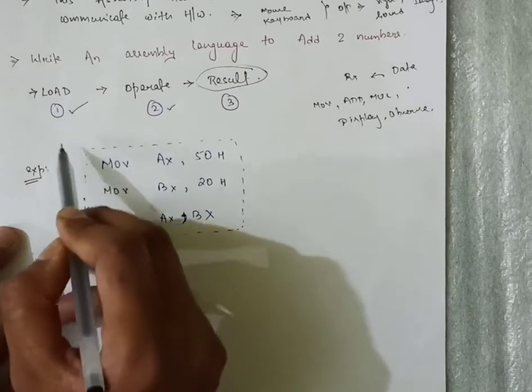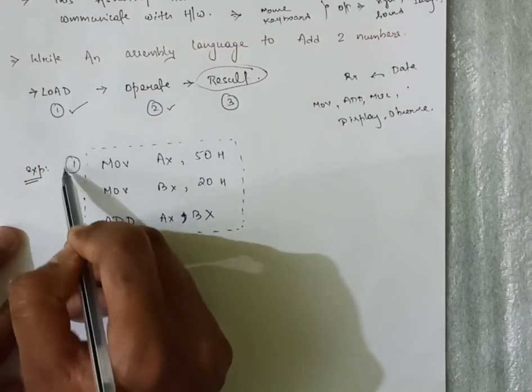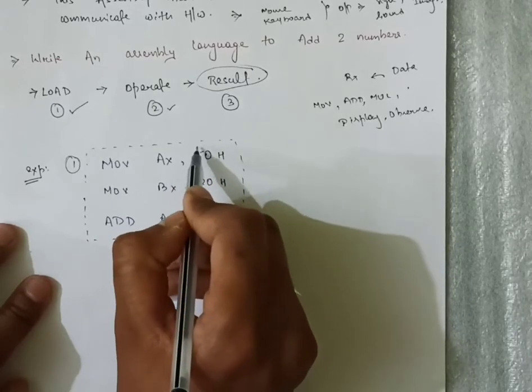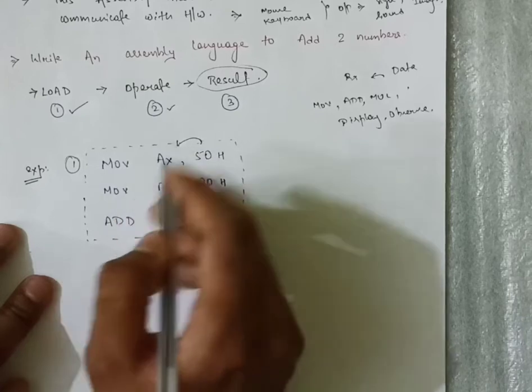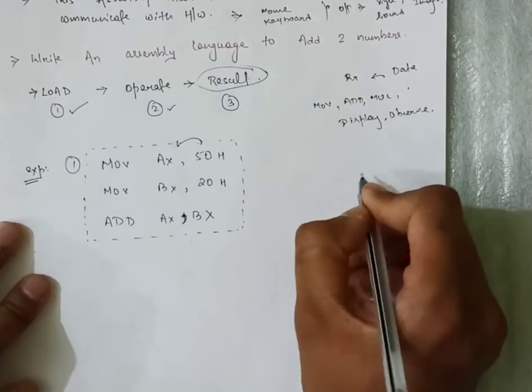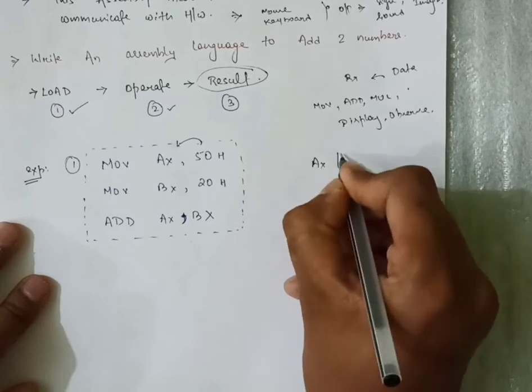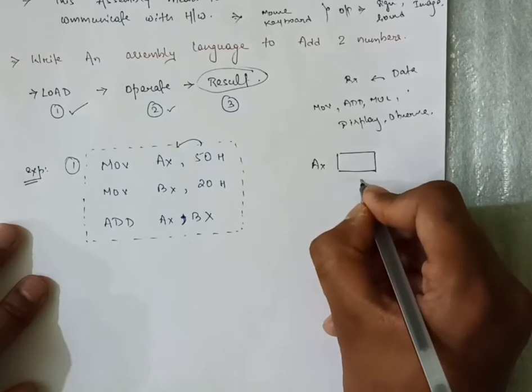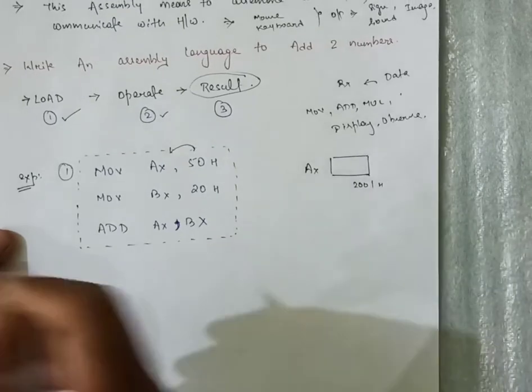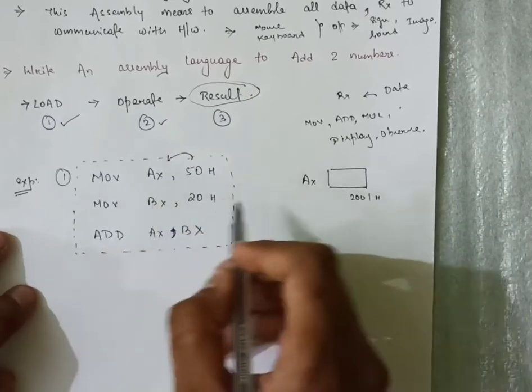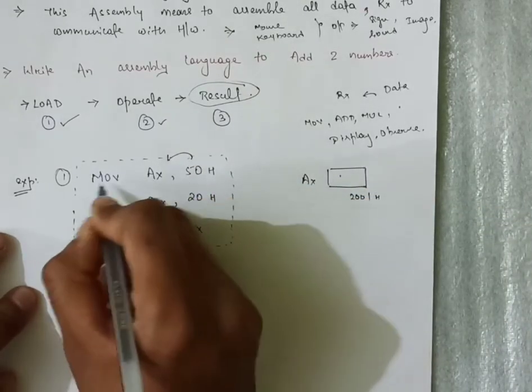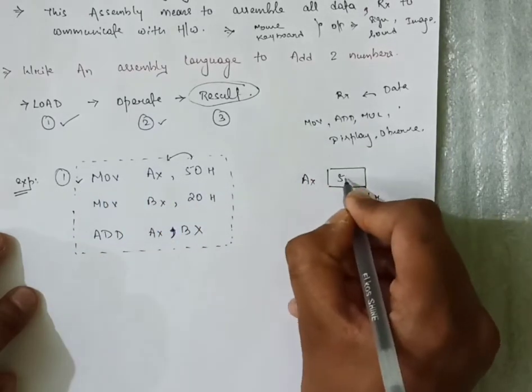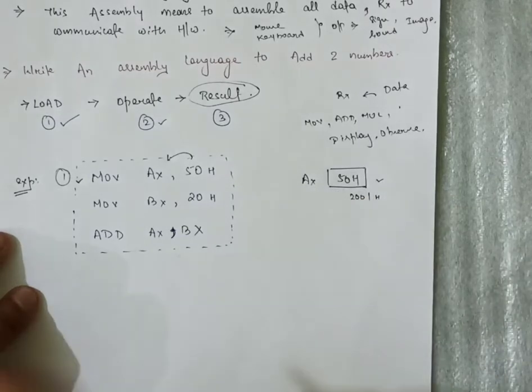Let's start with our example of how this code will be written in assembly level language. First step is load: we want to load the value in AX register. Suppose AX is our register memory, I will draw the diagram. Suppose AX is the name of our register, it has address name 2001H. In AX, we are loading, moving the data 50H, so the AX value will be 50H.